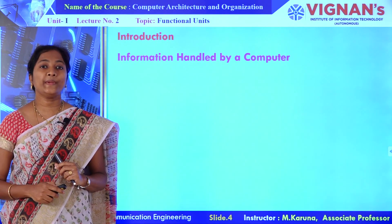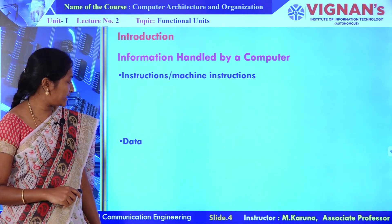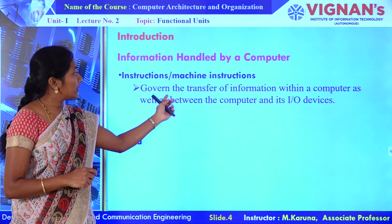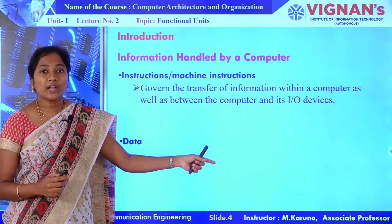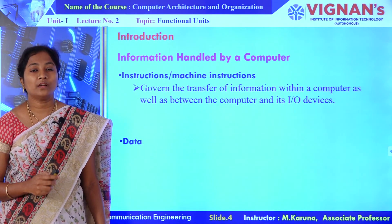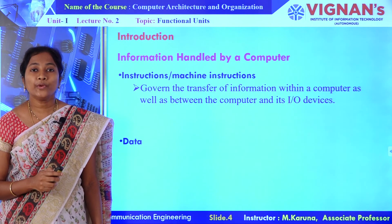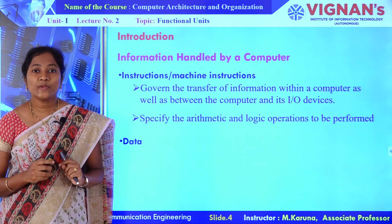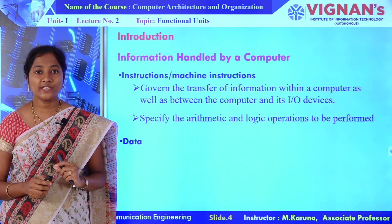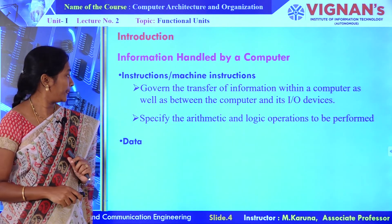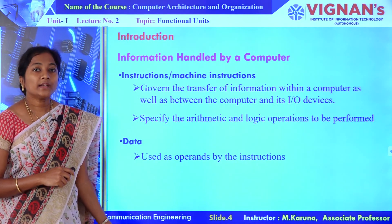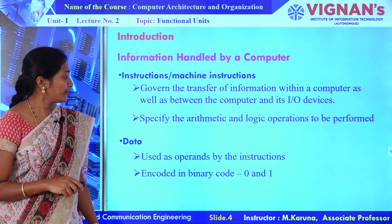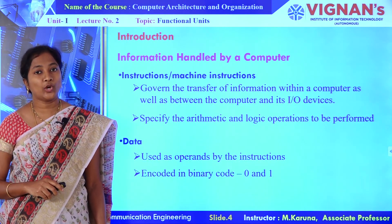Information may be instruction as well as data. Instructions govern the IO transfers within the computer or between the computer and IO devices. And also, instructions specify what kind of operation is to be performed. Data can be represented as numbers and also it can be represented in terms of binary digits 0 and 1.